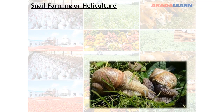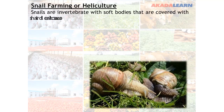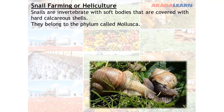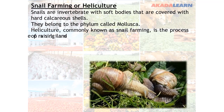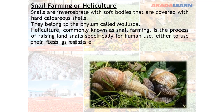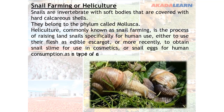The next form is snail farming or heliculture. Snails are invertebrates with soft bodies covered with hard calcareous shells. They belong to the phylum Mollusca. Heliculture, commonly known as snail farming, is a process of raising land snails specifically for human use — either to use their flesh as edible escargot, or more recently to obtain snail slime for use in cosmetics, or snail eggs for human consumption.